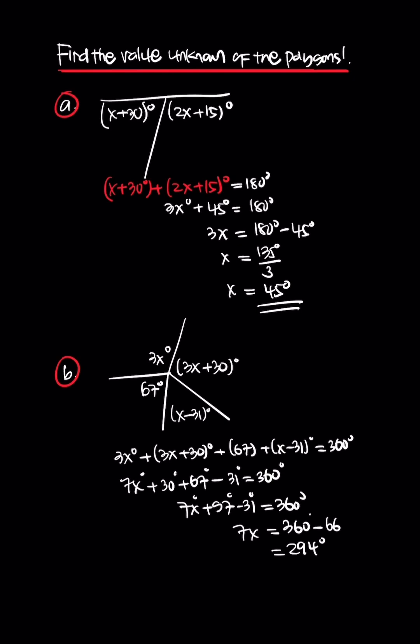Next, number 3. We have a shape with a right angle, so this is 15x degrees and this is 2x plus 5.